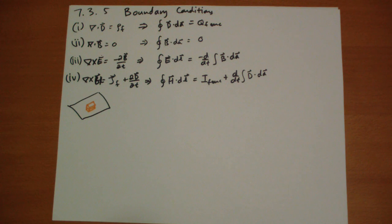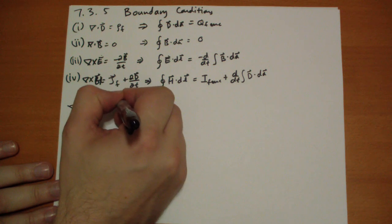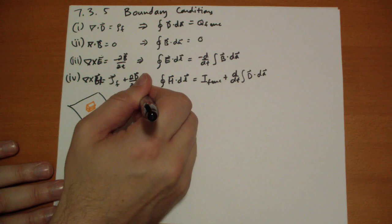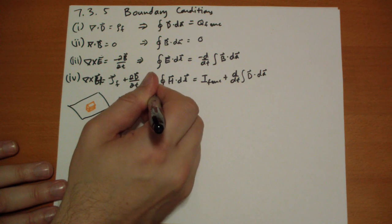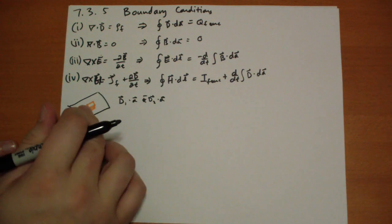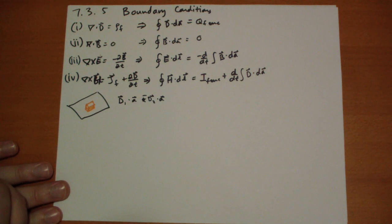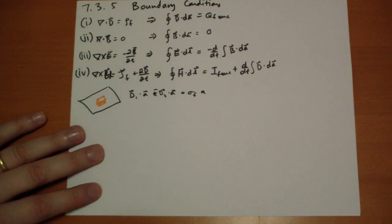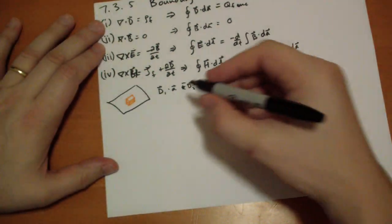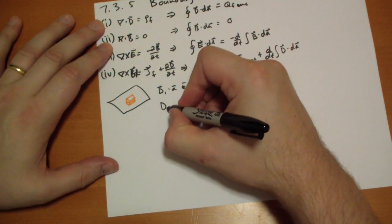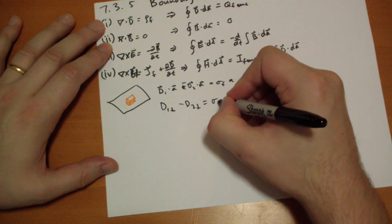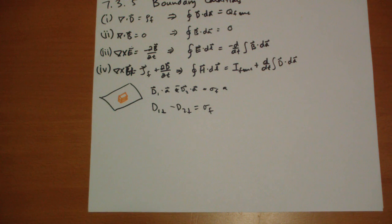The sides can't contribute because they have no area. So we get D vector dot A minus D2 dot A, where D1 is the D field on top and D2 is on the bottom. That equals the free charge times A. Since the area vector points perpendicular, D1 perpendicular minus D2 perpendicular equals the free surface charge sigma f. That's the relationship from boundary condition one.